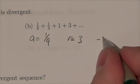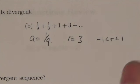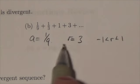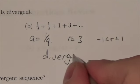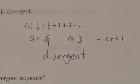Now, to be convergent, r has to be in the interval between negative 1 and 1. This isn't. So we know, or we can state right away, that this is going to be a divergent series.